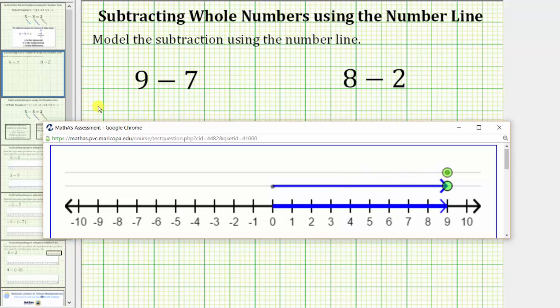Now because we're subtracting seven or removing seven from nine, we move the top point left seven units. So one, two, three, four, five, six, seven units back to the left. We are now at positive two on the number line, which shows nine minus seven equals two.